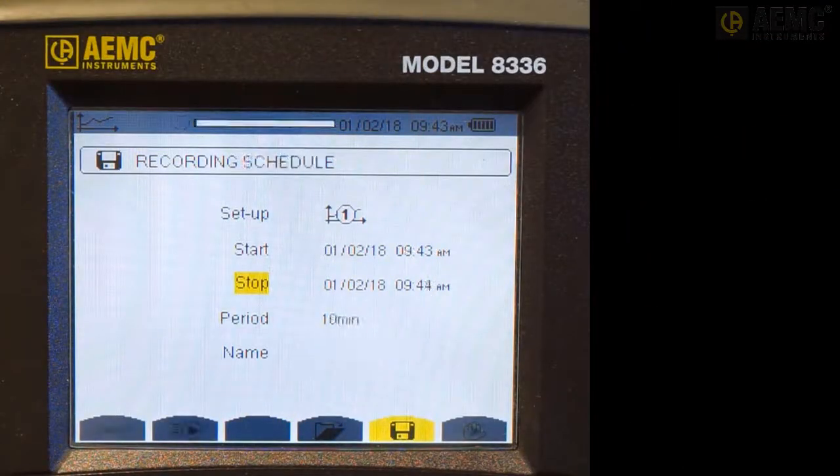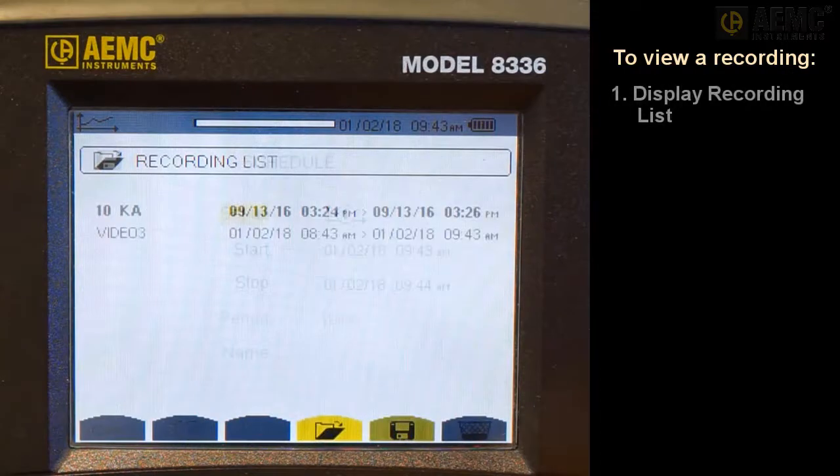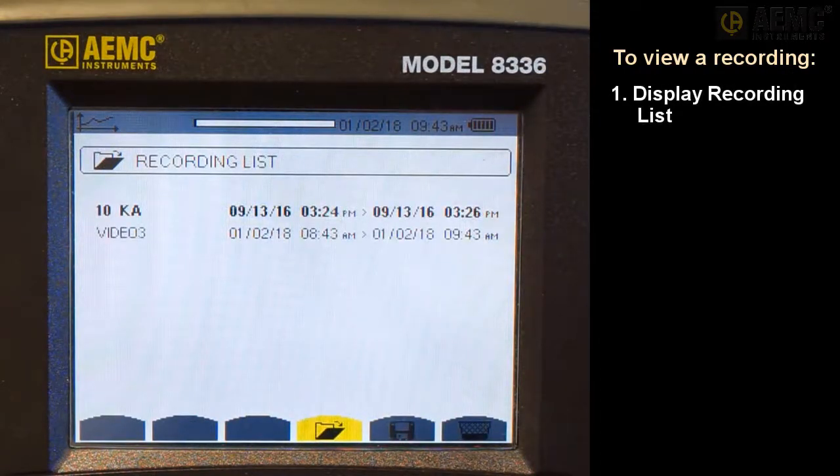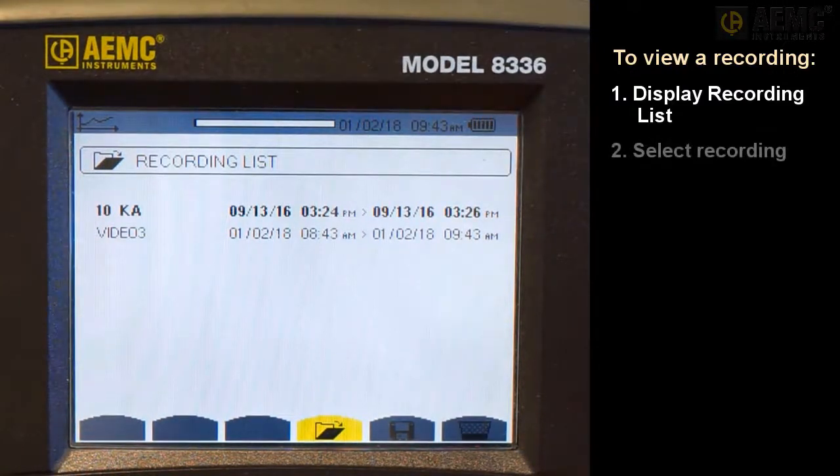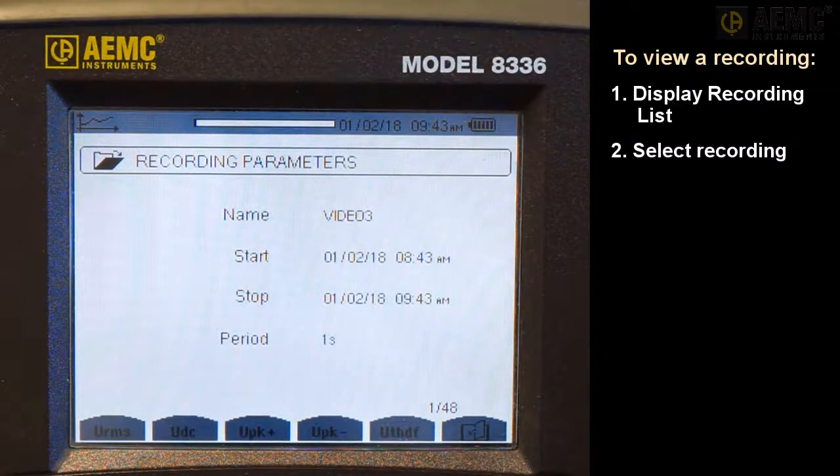When your recording is finished, you can view it in the instrument's recording list. If the Recording Schedule screen is displayed, press the yellow Function button under the Folder icon. If any other screen is displayed, press the Recording button. Either action displays the Recording List screen. If more than one recording is stored, use the arrows to select the desired recording, then press Enter to open it. The first page of the recording shows basic information, including the recording name, the start and stop times, and the sample period used.